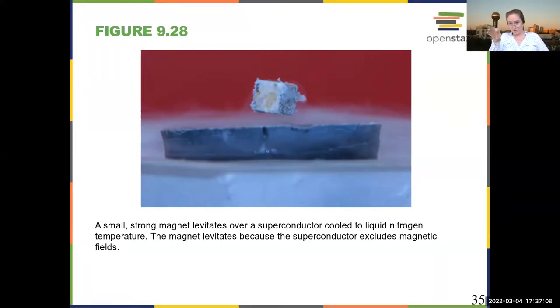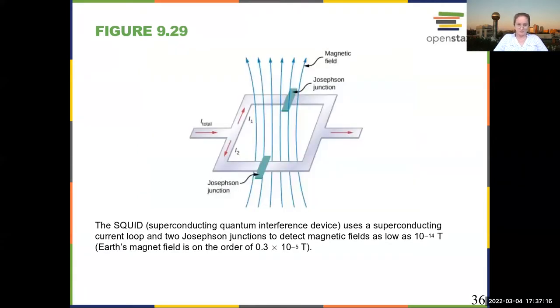It wants to arrange things so that it excludes magnetic fields. So it actually will push the magnet up and make it levitate. And this is a SQUID,